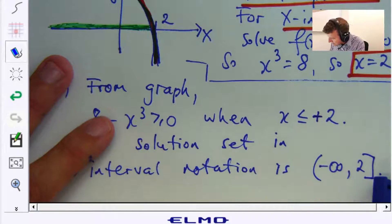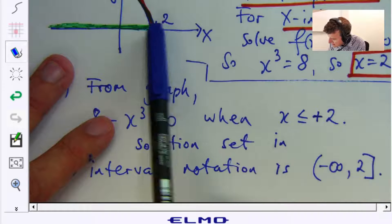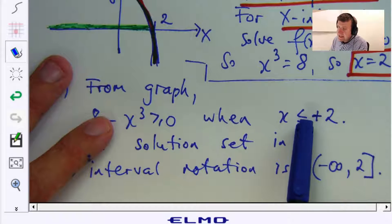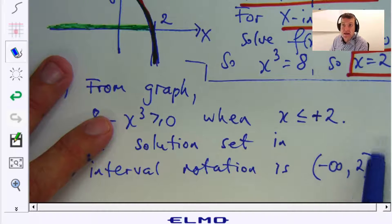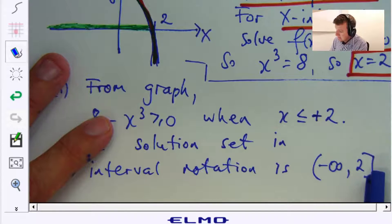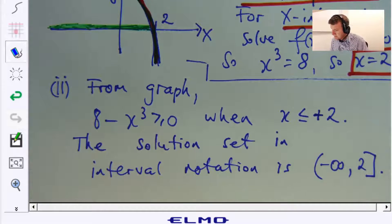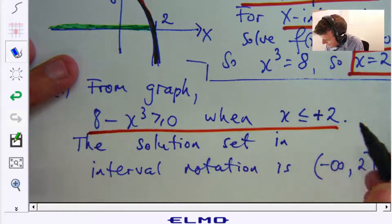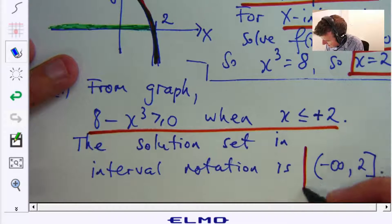So the interval there is off to negative infinity and up to 2. Now, I've used the square bracket there because x could be less than or equal to 2. It could be equal to 2. If it was strictly less than, I would have a curved bracket there. Alright, so let's highlight our solution.